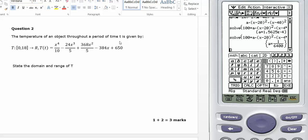The temperature of an object throughout a time period T is given by this. State the domain and range.